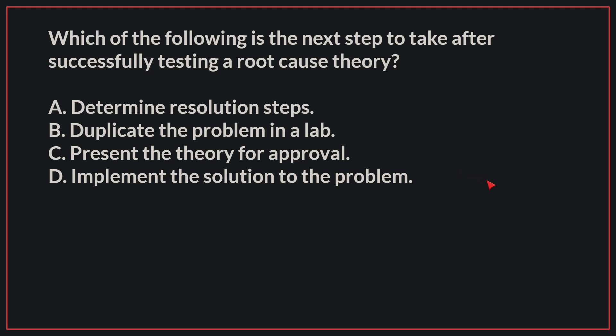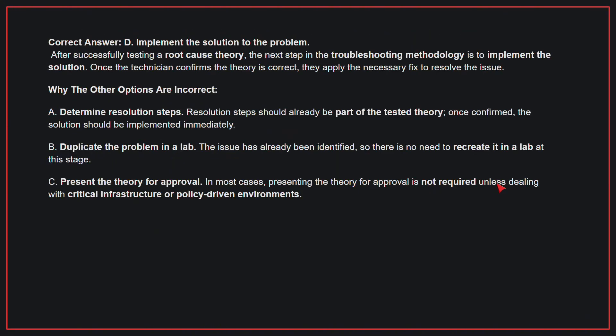Which of the following is the next step to take after successfully testing a root cause theory? The correct answer is D: implement the solution to the problem. After successfully testing a root cause theory, the next step in the troubleshooting methodology is to implement the solution. Once the technician confirms the theory is correct, they apply the necessary fix to resolve the issue.